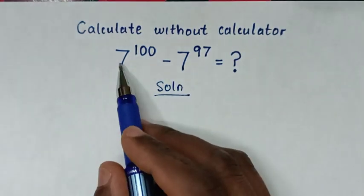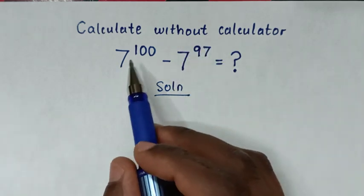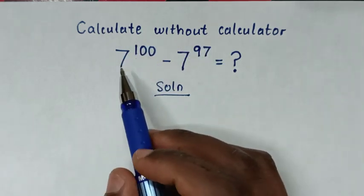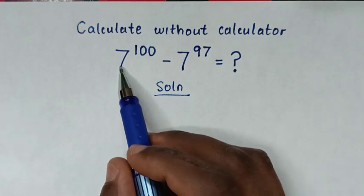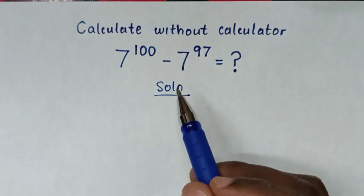From 7 power of 100, in here 7 power of 97 is smaller than 7 power of 100. So we'll make this 7 power of 100 to have common 7 power of 97.